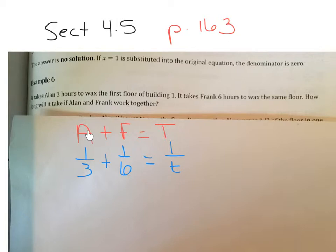It takes Frank 6 hours to do the whole floor. So he can do 1 sixth in 1 hour. We don't know what that total time will be, but it will be 1 hour out of the total. And that's the variable t. We don't know what the total time is. That's what we're trying to find out. So this is your equation. And this is a rational equation.